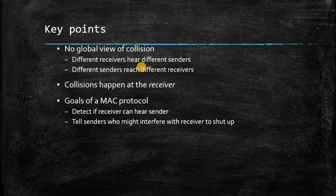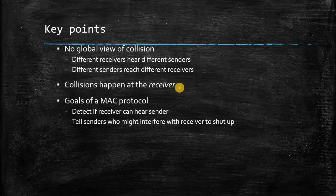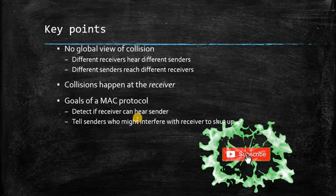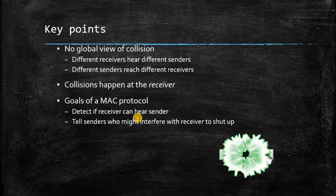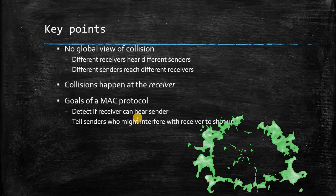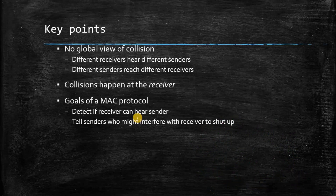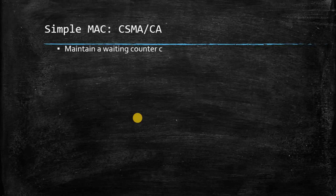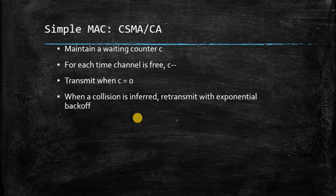Key points to remember: there is no global view of collision. Different receivers hear different senders because this is a wireless medium. Collision happens at the receiver. The goal of the MAC protocol we are about to study is to use Request to Send and Clear to Send packets to detect if the receiver can hear the sender, and to tell senders who might interfere with the receiver to shut down their operation. This leads us to CSMA/CA — Carrier Sense Multiple Access, Collision Avoidance.